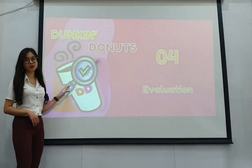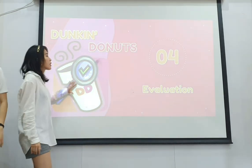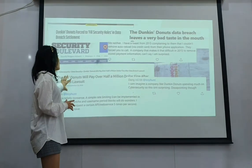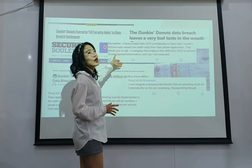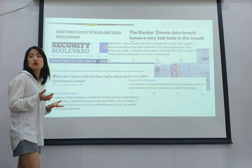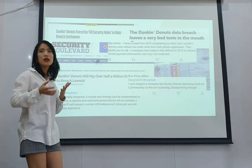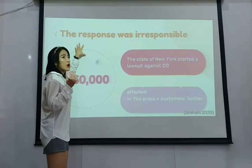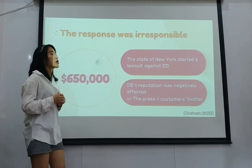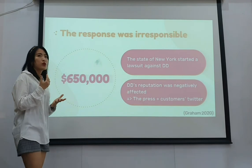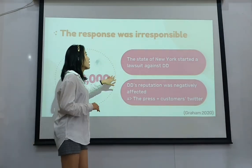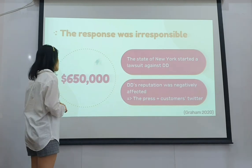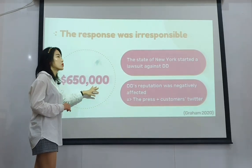The last part is the evaluation of Dunkin' Donuts' data breach. There were many negative comments and negative news about this case, because as shown previously, they did nothing to protect customer information. Dunkin' Donuts' response was considered irresponsible, as customers bring them profit yet were not protected. As a result, the state of New York started a lawsuit against Dunkin' Donuts, and they had to pay up to $650,000 in penalties.